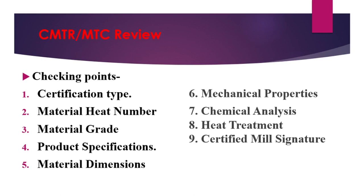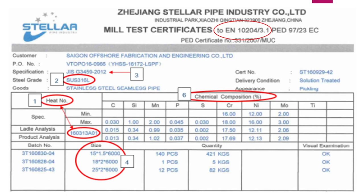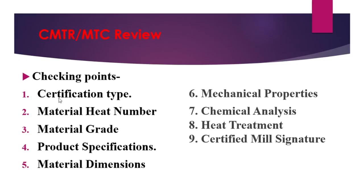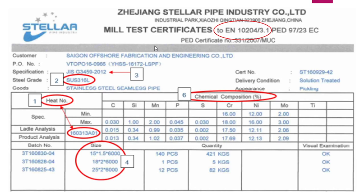Let's see what the physical MTC looks like. I show you the first page and the second page - I will show you one by one. The first thing is the certification type. So looking at this physical MTC - I took this sample MTC from Google for your information - this MTC is certified to EN 10204 3.1. So this is a 3.1 material, and this certificate is certified by the manufacturer.